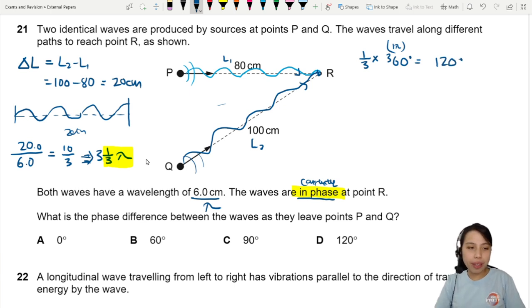So here you can say that because of this path difference, they somehow meet in phase at point R where they normally wouldn't. So that's because at the beginning where they were created, it was already out of phase by 120 degrees. So you choose 120 as the answer. Hope that was helpful.